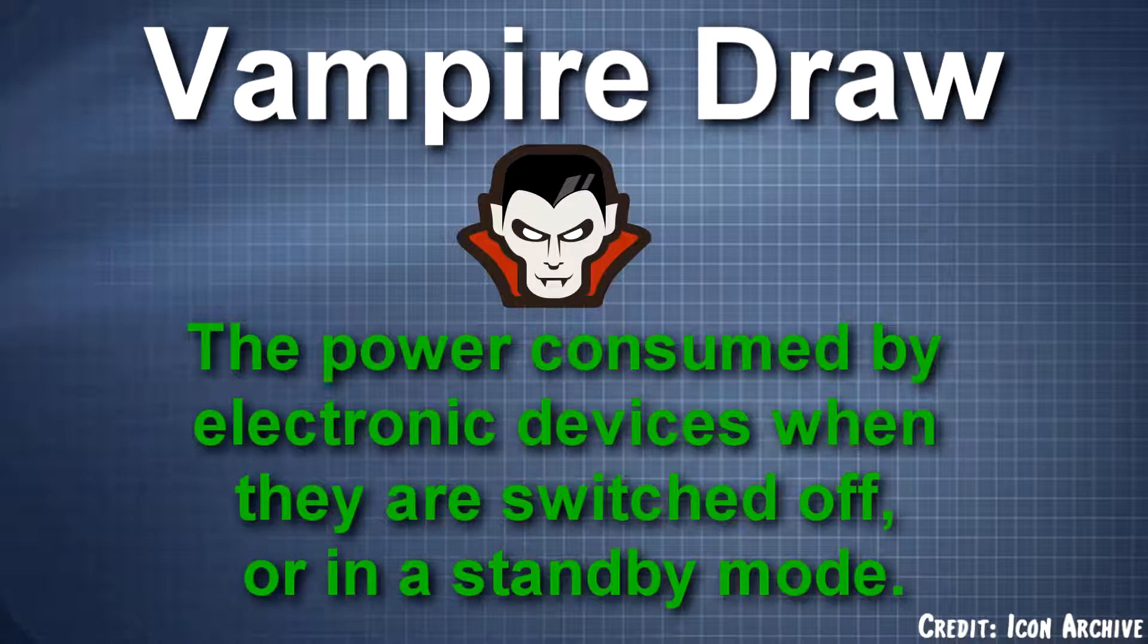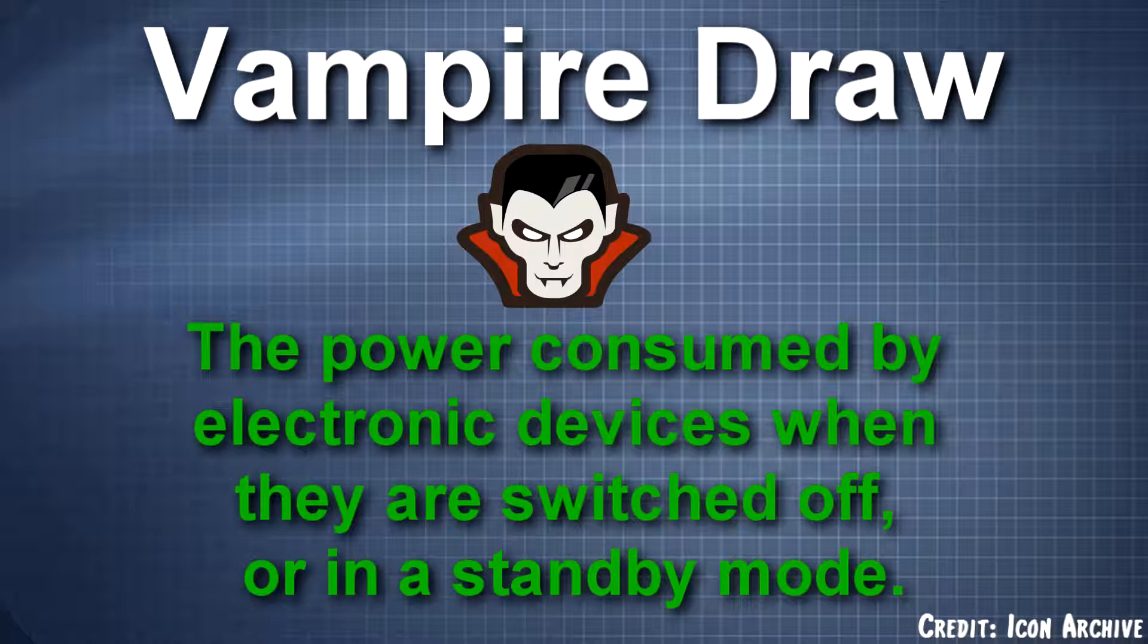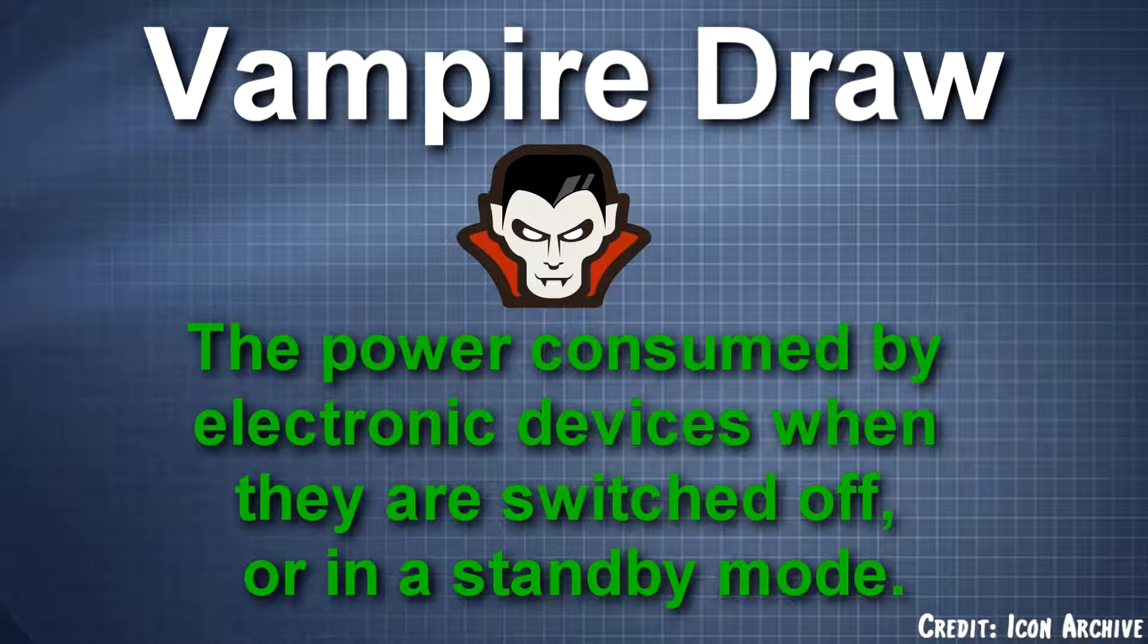Number one, vampire draw. Vampire draw refers to the power consumed by electronic appliances when they are switched off or in a standby mode. Many electronics, especially TVs, may appear off but are actually still drawing electricity for clocks, timers, remotes, or are just in standby mode.